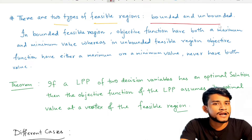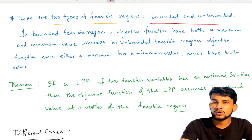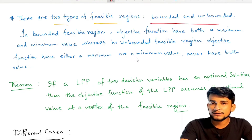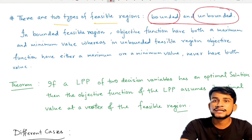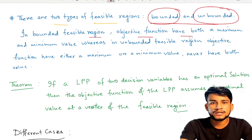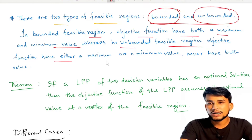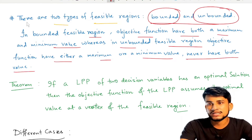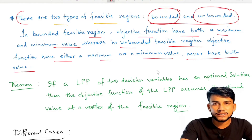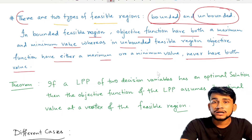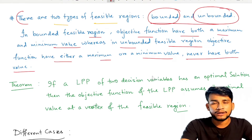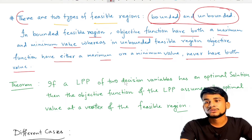So there are two types of feasible region: one is bounded region and one is unbounded region. For the case of the graphical method, when we draw the graph based on some LPP, basically two situations occur. In a bounded region, the objective function has both a minimum and a maximum value, whereas in the unbounded feasible region, the objective function has either a maximum or a minimum value — never both.